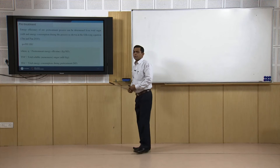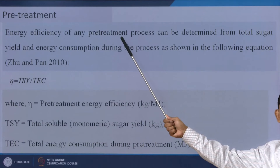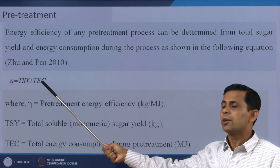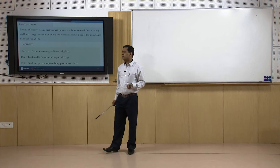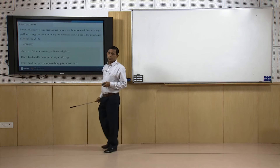How can we define the energy efficiency of a pretreatment step? It is defined as efficiency = TSY / TEC, where TSY is the total soluble sugar yield in kg and TEC is the total energy consumption during pretreatment in megajoules. So the unit is kg per megajoule, which gives the efficiency of the pretreatment process.